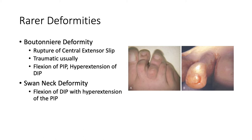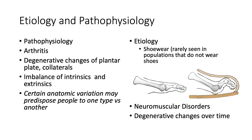Some rare deformities that we talk about more in the hand but do actually see in the foot are the boutonniere deformity and the swan neck deformity — the anatomy is very analogous. The boutonniere deformity involves rupture of the central extensor slip, usually traumatic, giving flexion of the PIP and hyperextension of the DIP. For the swan neck you get flexion of the DIP with hyperextension of the PIP. These are very rare but certainly possible to see.